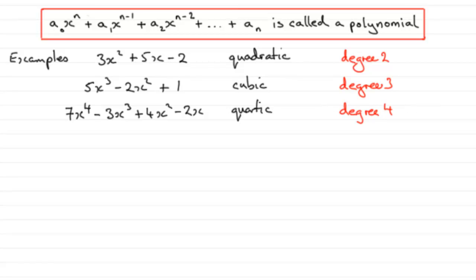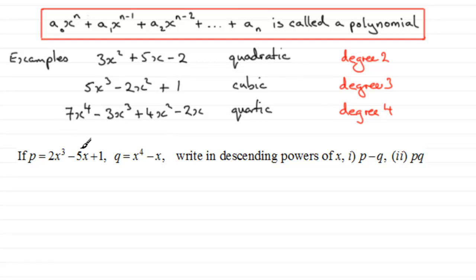Now, we're often called upon to work with polynomials to do addition, subtraction, multiplication and division. What I've got here is an example, which I would certainly encourage you to try, where we've got two polynomials, P and Q. I've defined P as this cubic polynomial and Q as this quartic polynomial. P is 2x cubed minus 5x plus 1 and Q is x to the power 4 minus x. What I want you to do is to write in descending powers of x, P minus Q and P multiplied by Q.